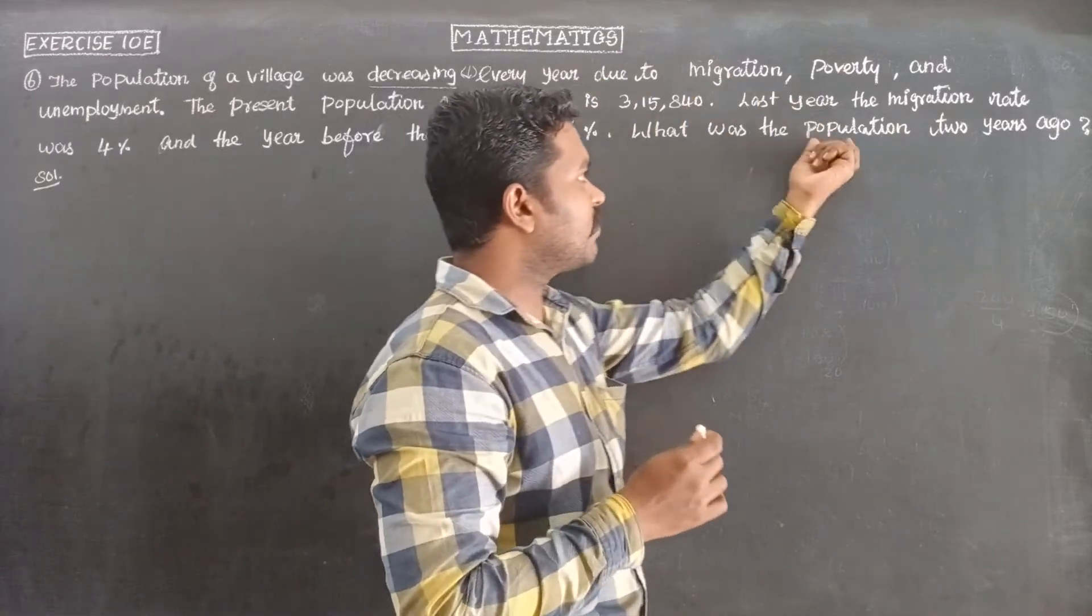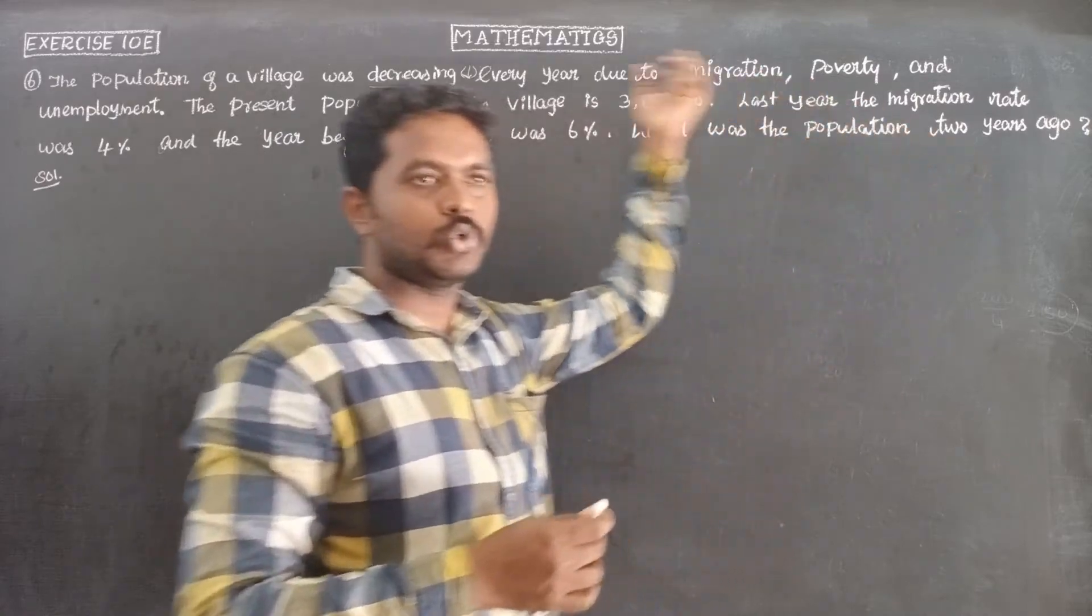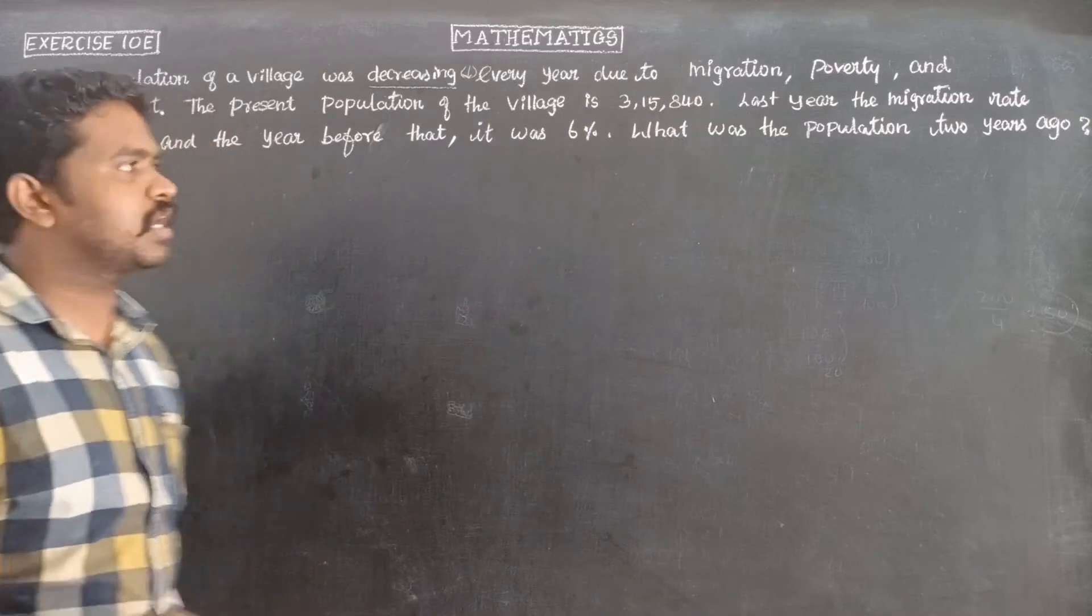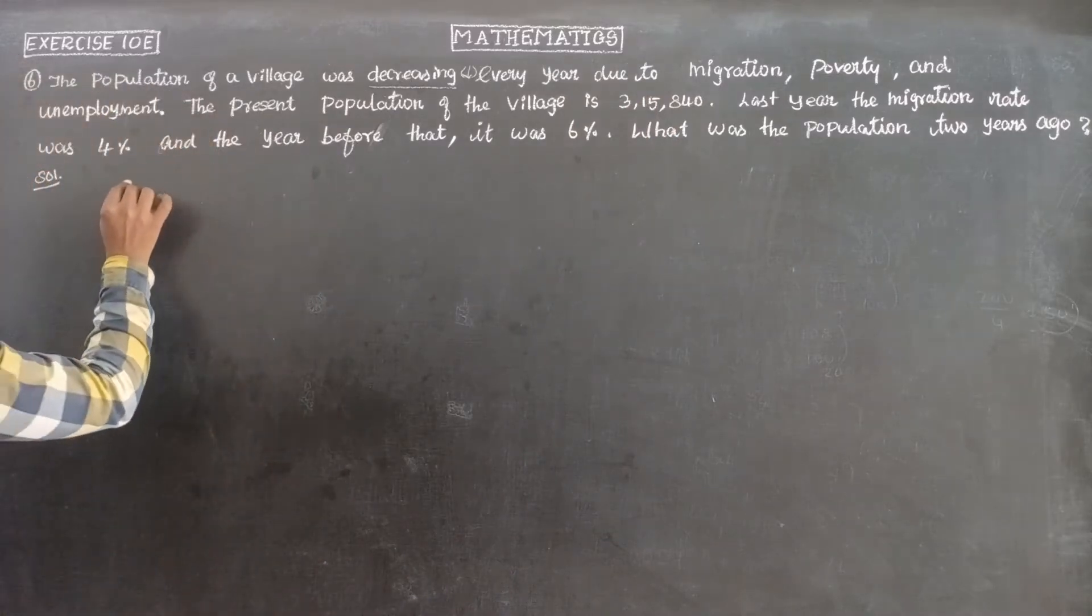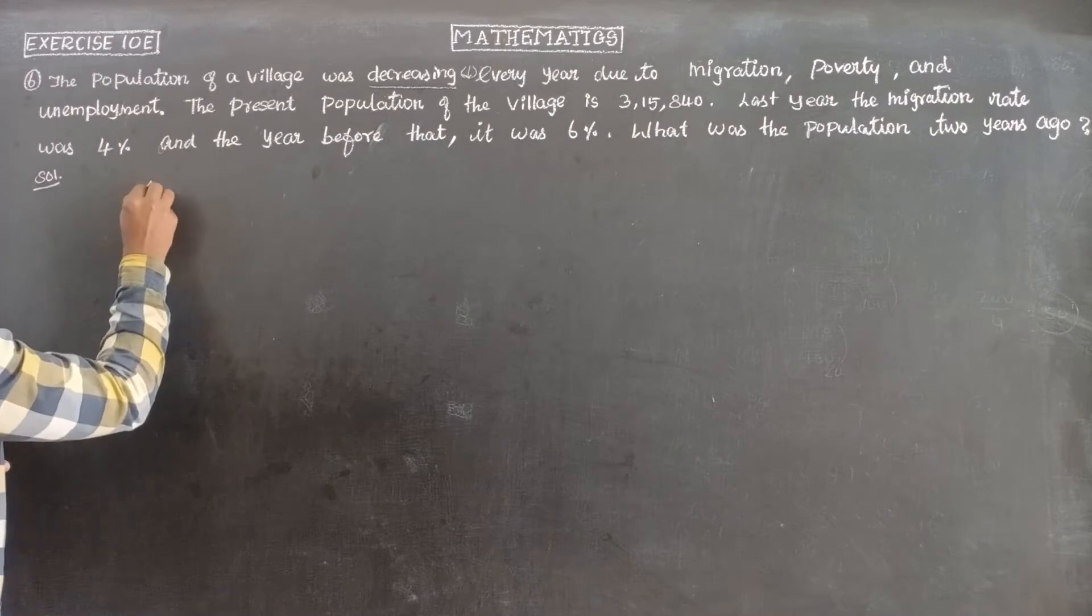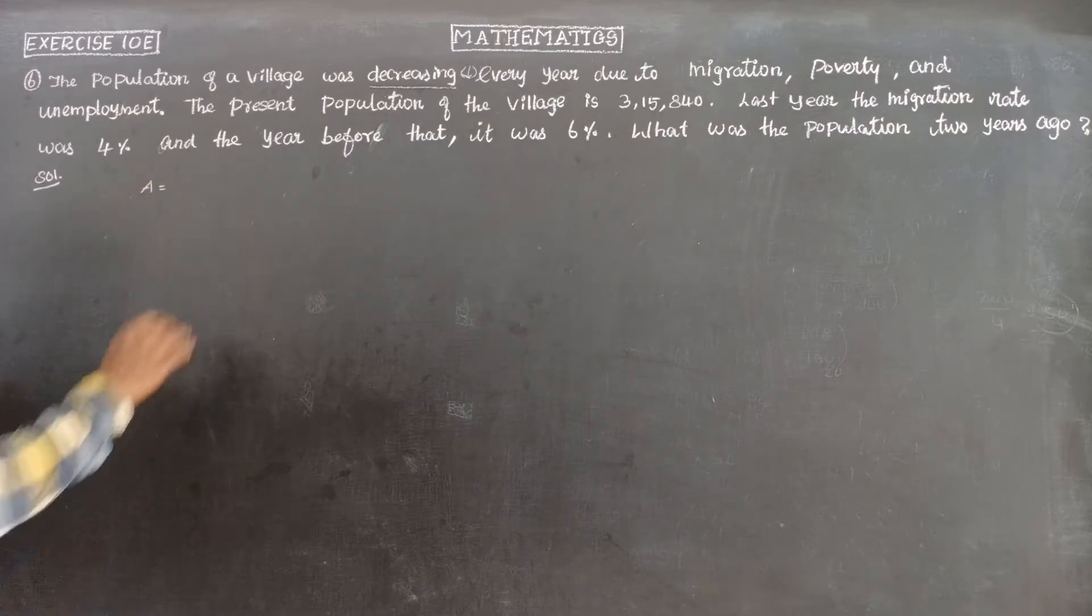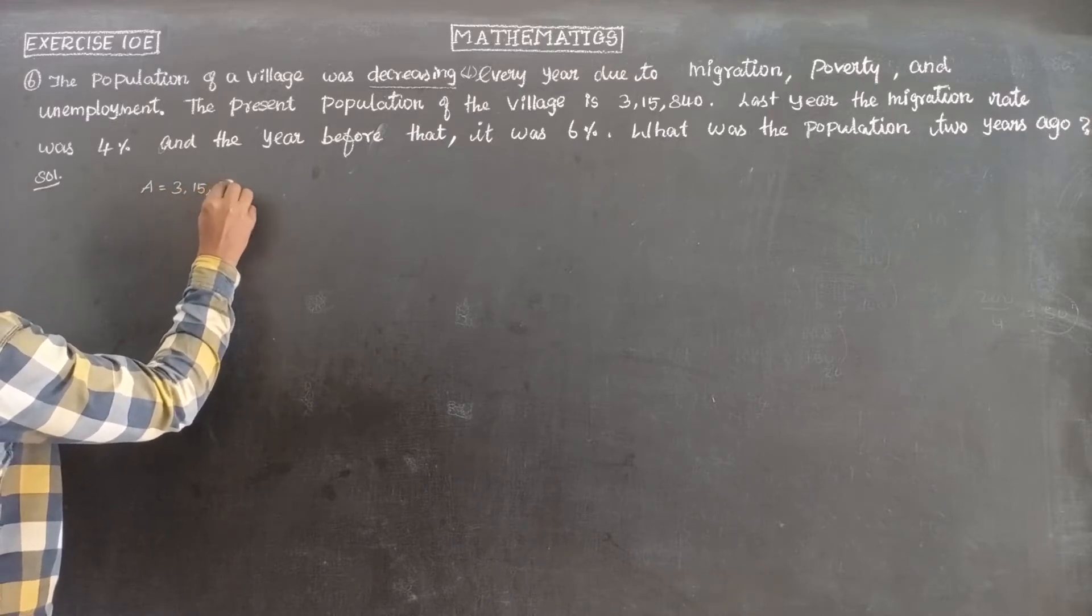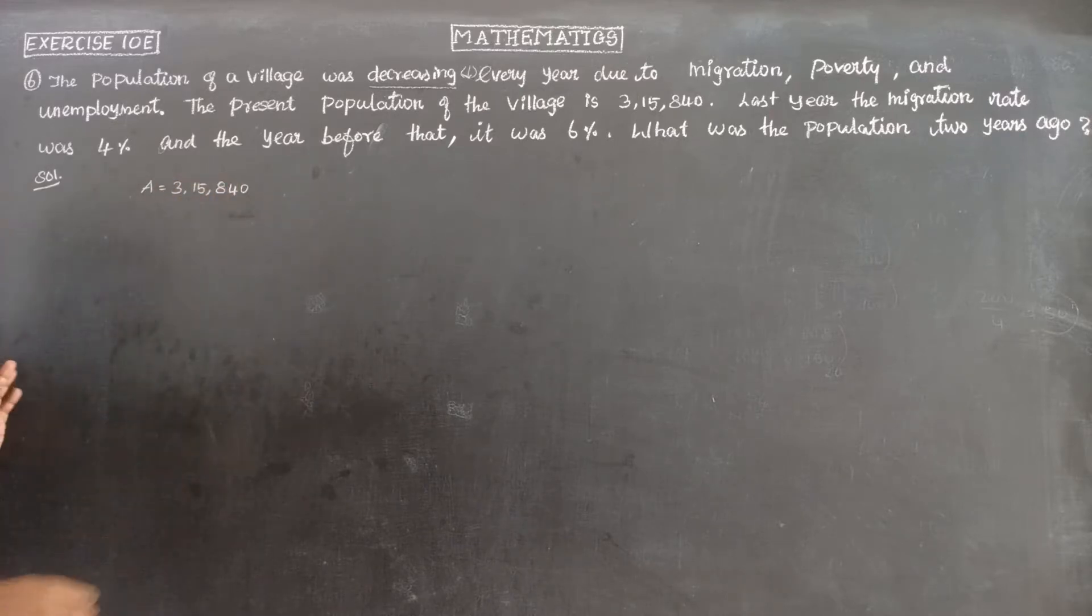What was the population two years ago? So two years back, we need to find the population. The present population is 3,15,840. That is the total amount. The principal initial value is P, which is a question mark.